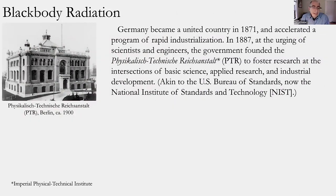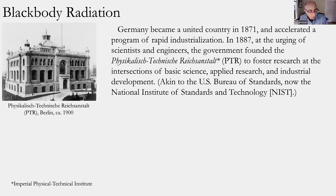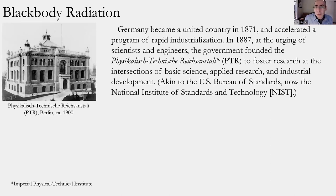Before we talk about who was rethinking light, it's important to step back and understand where and why this was happening. A lot of the work we're focusing on today was happening within the newly unified country called Germany. There was no country of Germany until 1871 — there were German-speaking territories, but a single unified national country emerged as an outcome of the Franco-Prussian War, not long before Einstein himself was born.